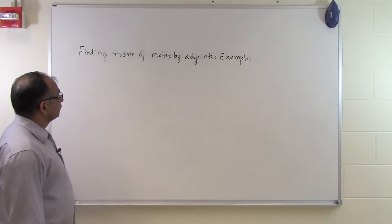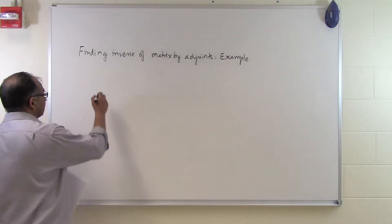In this segment, we'll take the inverse of a matrix by using the adjoints method. Let's take an example here.